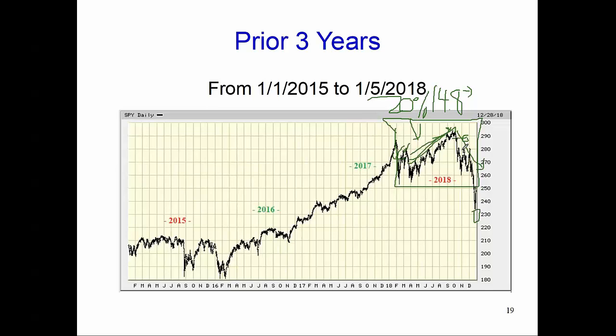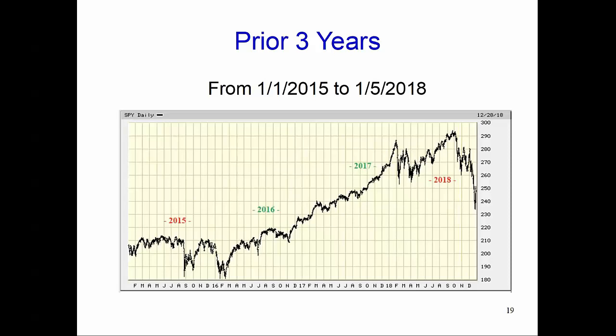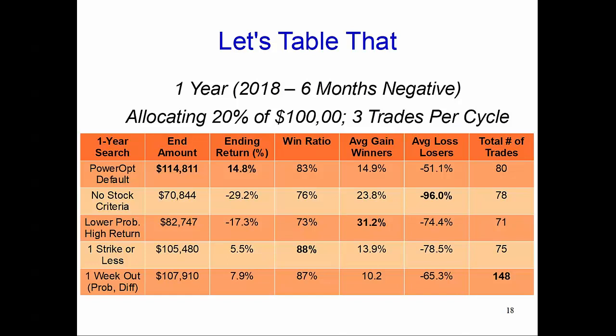I personally stopped trading bull put credit spreads on October 12th and resumed the next year. But even if you'd kept trading and followed the trading plan discussed in the product, you still would have had a profitable year — better than doing one-point spreads, better than going one week out, better than using no stock criteria. Even looking for an 85% probability spread two weeks out with a potential 15% return sounds great and does look great.